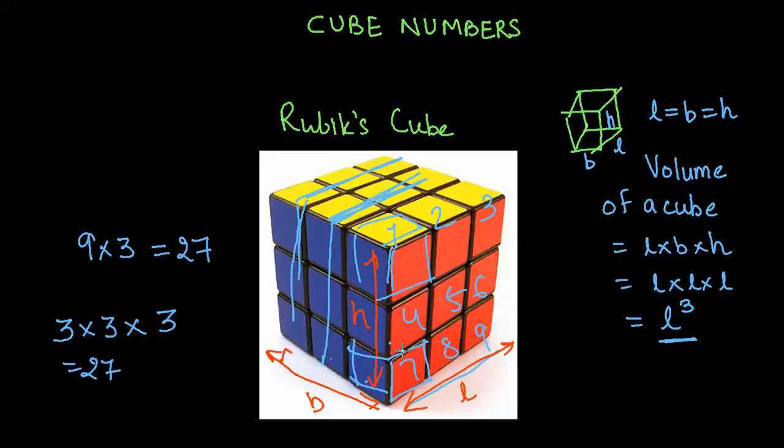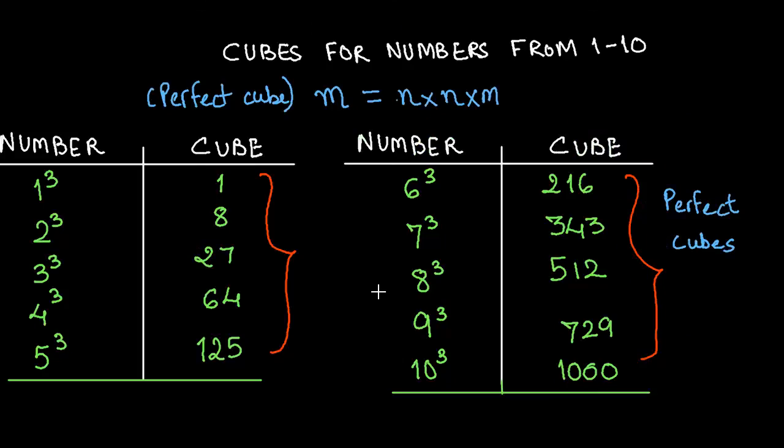It still comes out to be the same. So this is another... so Rubik's cube is actually a perfect cube. So that was about cubes. Now before we wrap up this let us just quickly have a look at some of the properties.